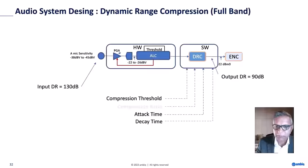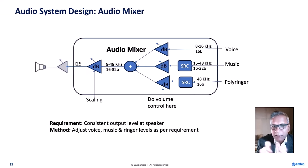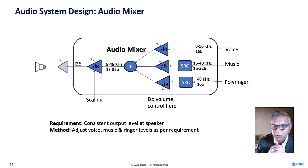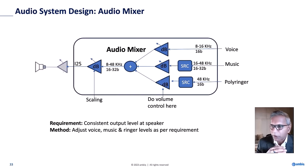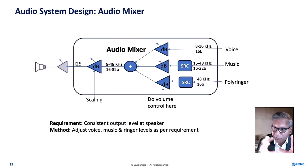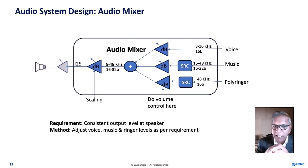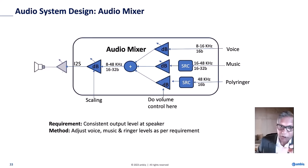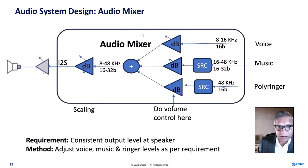The mixer's purpose is to mix signals that may be at different volume levels, sampling rates, and bit widths. For example, a voice call may be at 16 kHz 16-bit while music plays at 24-bit 48 kHz, and a ringtone at 44.1 kHz. The mixer ensures all signals are converted to the same sampling rate and volume level before mixing — downsampling higher-rate signals and leveling volumes so they can be combined cleanly.